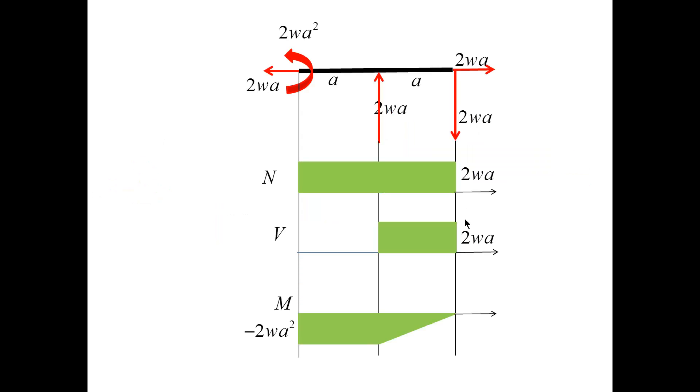So, for the left beam, I start with N equal to 2Wa, and it persists throughout the beam. V starts with 0, and the bending moment starts with minus 2Wa squared. Since V is equal to 0, the value of M is constant.